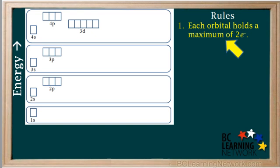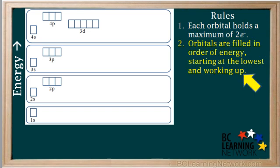The first rule is that each orbital, which is represented by a single rectangle on this diagram, can hold a maximum of two electrons. The second rule is that orbitals are filled up in order of energy, with the lower energy orbitals being filled first.